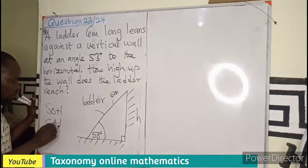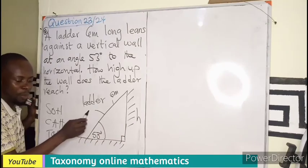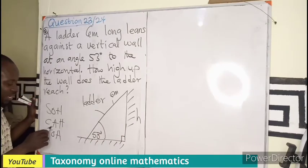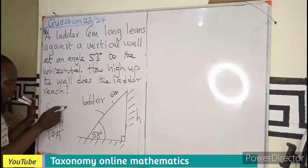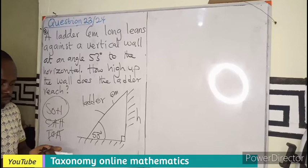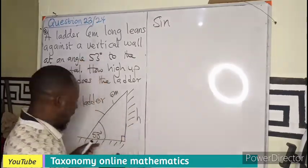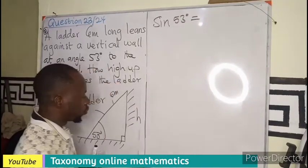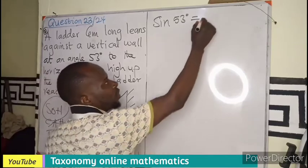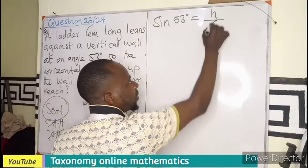SOH-CAH-TOA. We have opposite and hypotenuse. Adjacent is not part, so I will cancel any of the ratio that contains adjacent. I will be left with only sine. So that is going to be sine of the angle, which is 53 degrees, equals to the opposite side, which is our h, over the hypotenuse, which is our 6 meters.